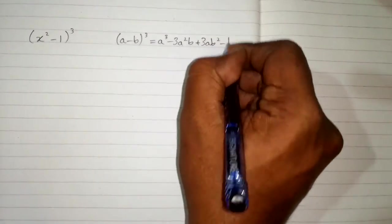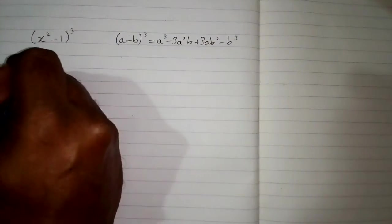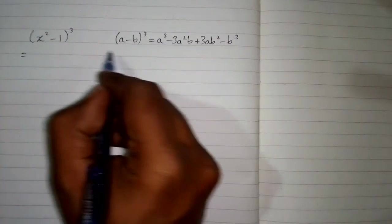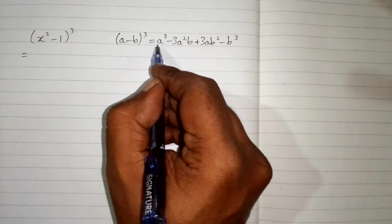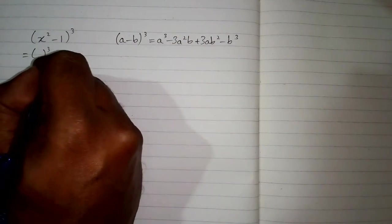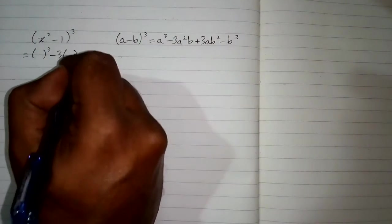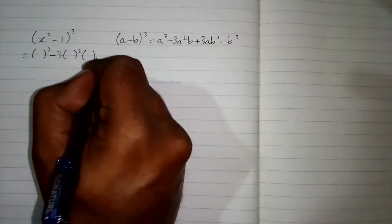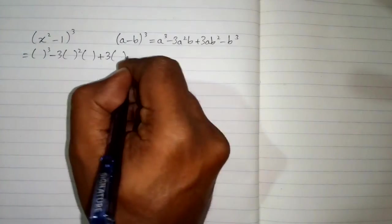First we will write the structure of the formula and put brackets in place of a and b in this formula. So this is a³ - 3a²b + 3ab² - b³.